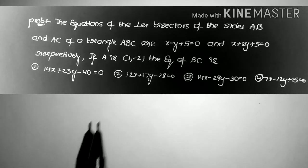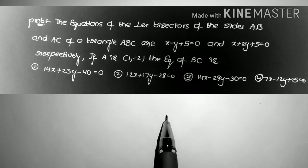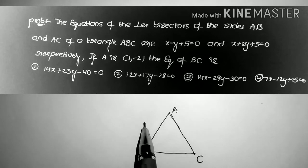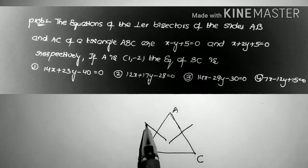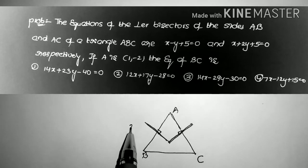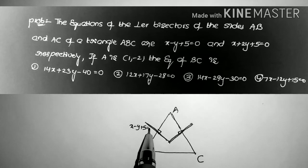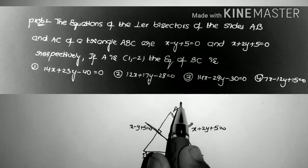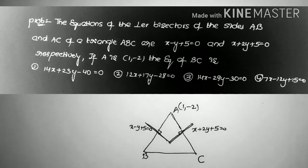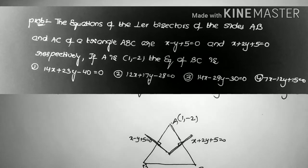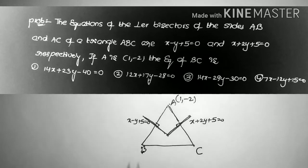Next problem: The equations of the perpendicular bisectors of sides AB and AC of triangle ABC are x - y + 5 = 0 and x + 2y + 5 = 0 respectively. If A = (1, -2), find the equation of BC. Point B is the image of A with respect to the perpendicular bisector of AB.